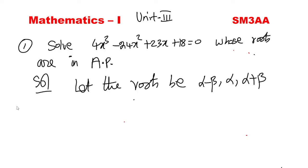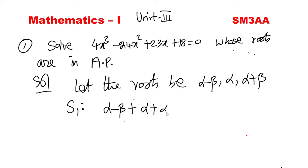Now for the 3 roots, S1 is the sum of the roots. S1, S2, S3 are the concepts. S1 equals the sum: (alpha minus beta) plus alpha plus (alpha plus beta), which equals minus A1 by A0.